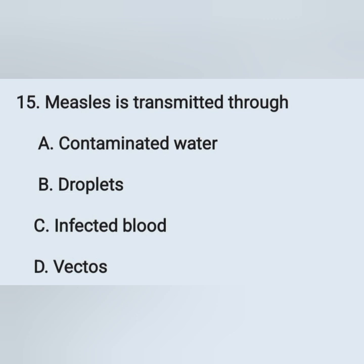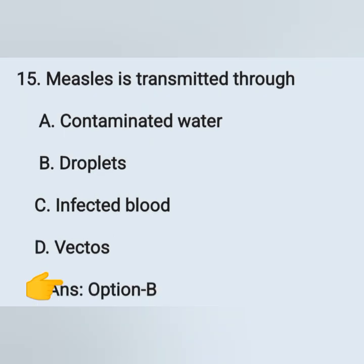Question number 15: measles is transmitted through — option A: contaminated water, option B: droplet, option C: infected blood, option D: vectors. Measles is a communicable disease transmitted through droplets — option B is the correct answer.